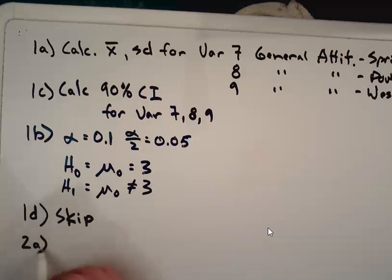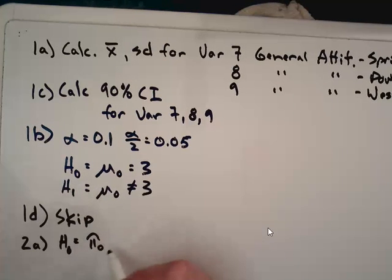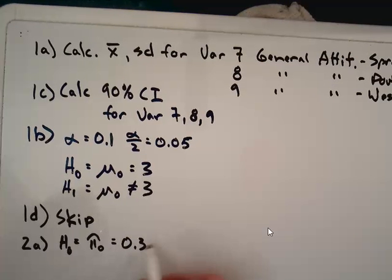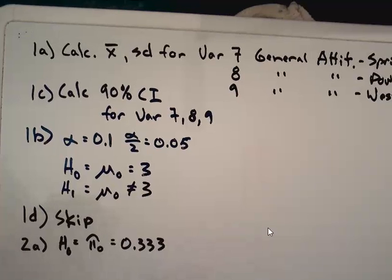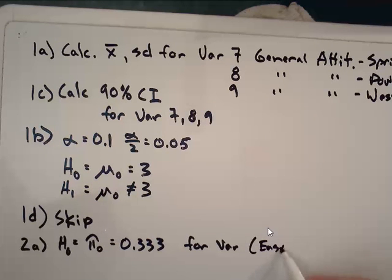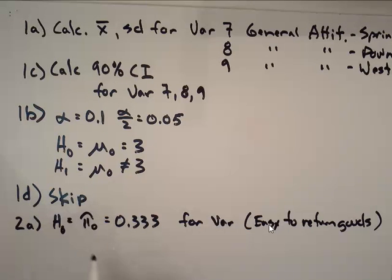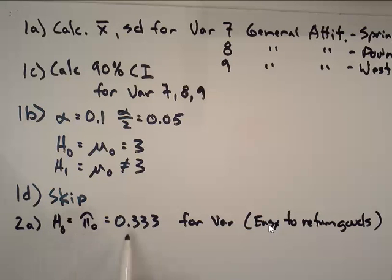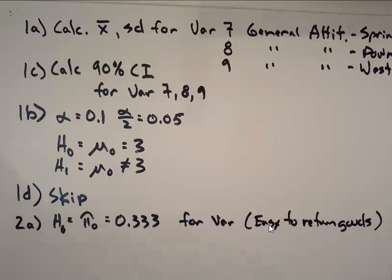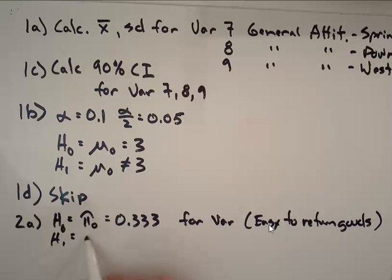Okay, in 2a, we're doing something else. Now we're looking at proportions, where we say h-naught, the proposed proportion is equal to 1 third, 0.33333. And this is for variable 10. And what is variable 10? It's easy to return goods. Okay, so let's see. Yes, and the idea is this. We're going to look at the three malls. And if the proportions, each of them got 1 third of the votes, that would mean that all of them are easy to return goods at. And that's going to be our null hypothesis.